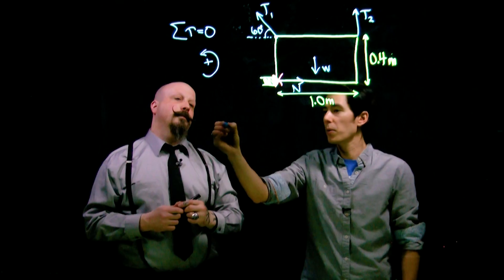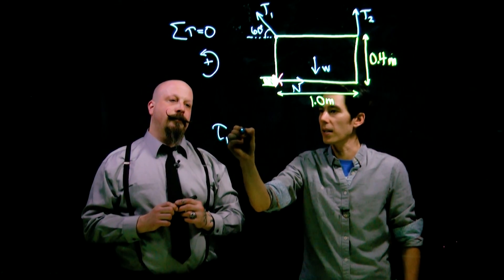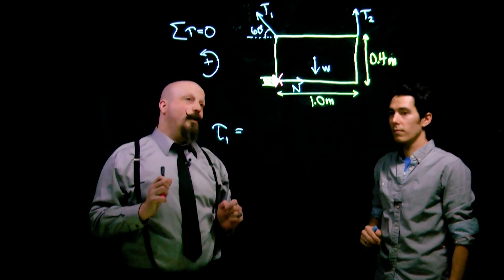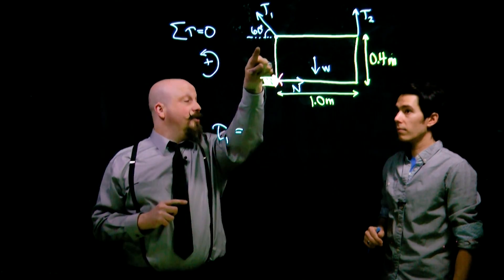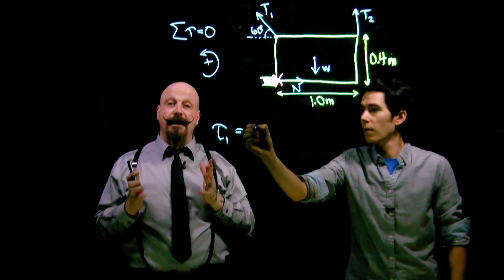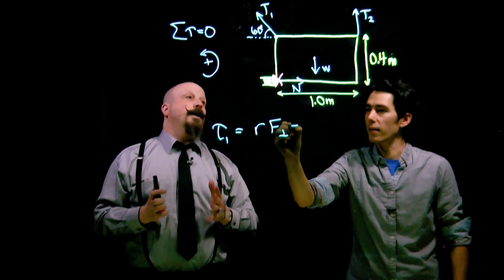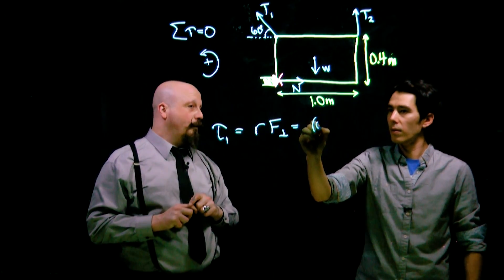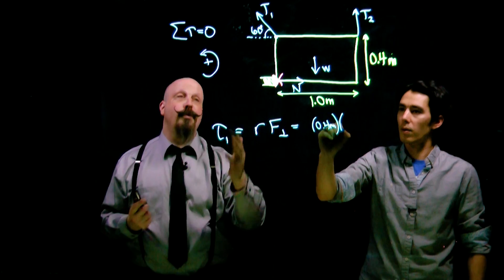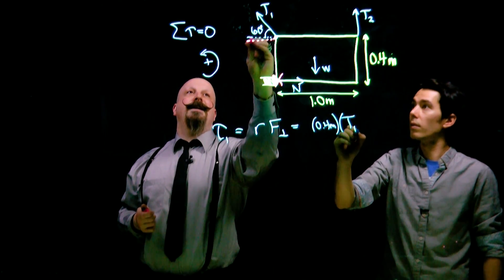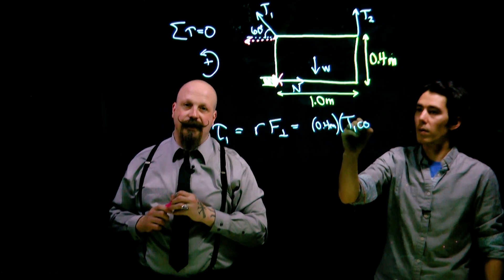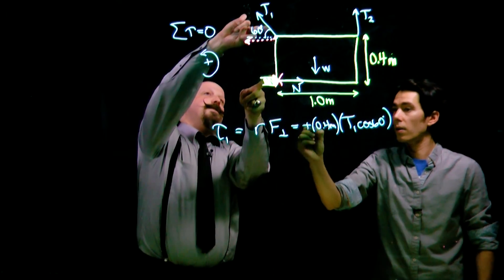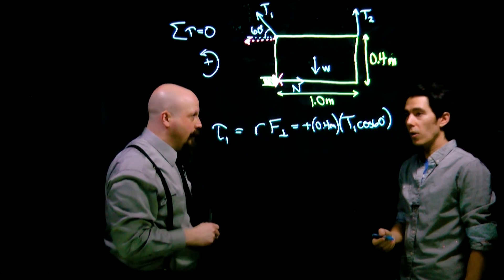This utilizes both methods of solving for the torque. For T1, we'll take the distance to the force multiplied by the force's perpendicular component. The distance from the pivot point to where that tension acts is 0.4 meters multiplied by the perpendicular component of this tension, so T1 times the cosine of 60 degrees. This is a positive torque. This would cause the entire thing to rotate in the direction of positive rotation.